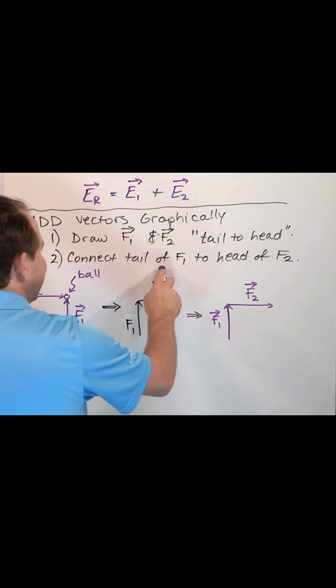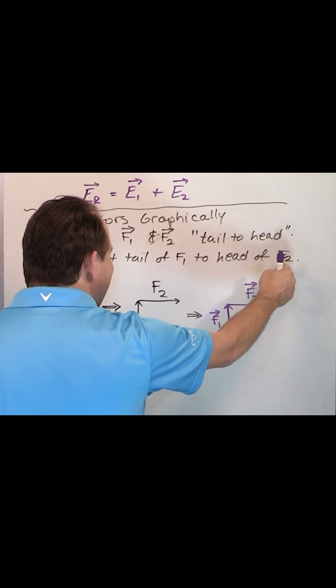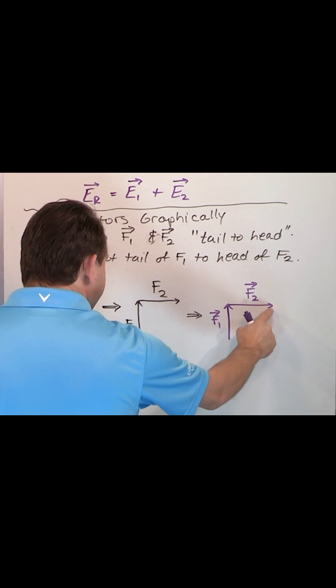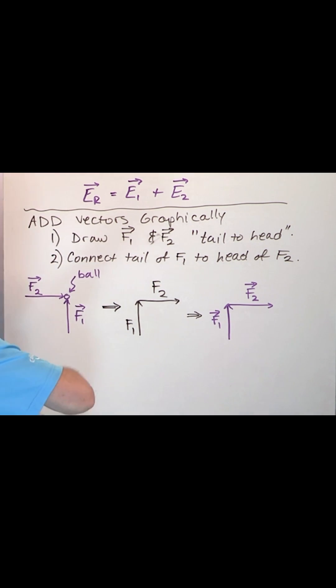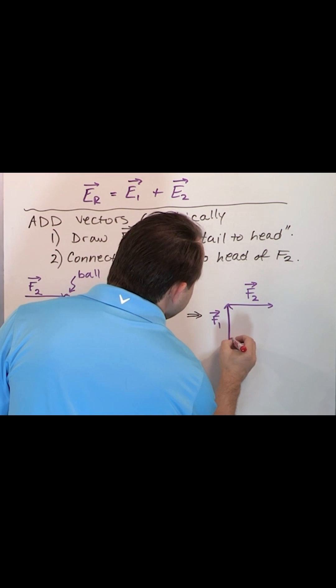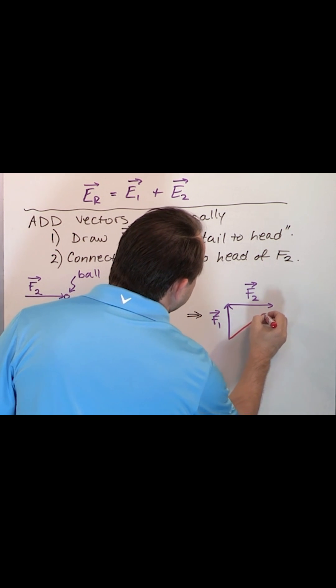Now the third part is we connect the tail of F1 to the head of F2. This is the tail of F1, head of F2. So what's going to happen is you literally go over here and you connect the dots from the tail of this one to the head of this one.